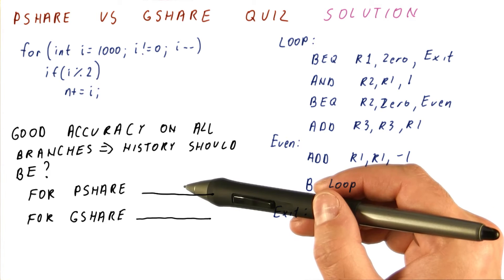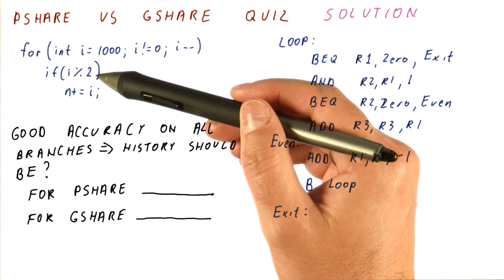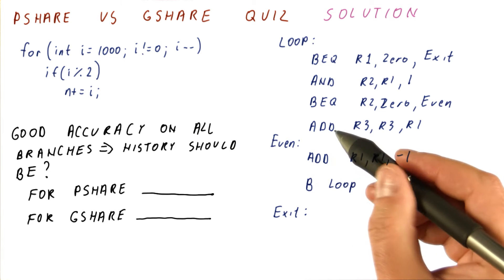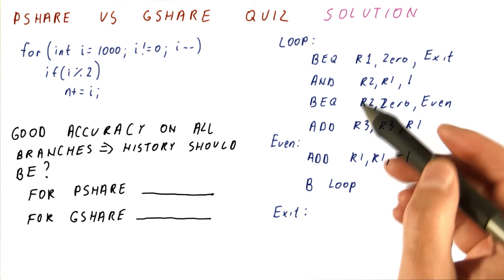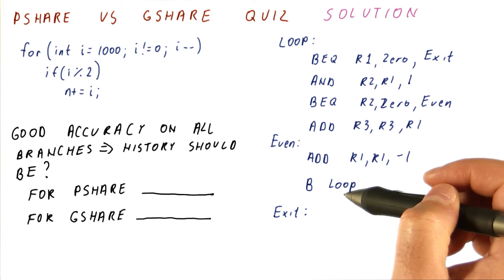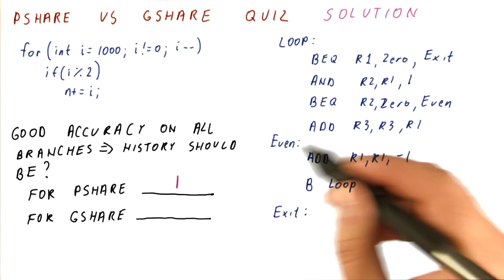For P-share, the even-odd handling can be done with just a history length of one. And the history length of one will work well for these two as well. So we just need a history length of one.